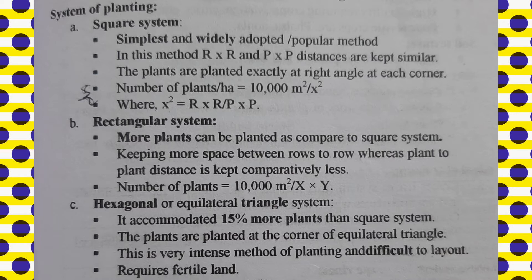The next one is the hexagonal or equilateral triangle system. Here, 15% more plants can be accommodated as compared to the square system. The plants are planted at the corners of an equilateral triangle, which is why it is also known as the equilateral triangle system. This is a very intense and difficult method of layout to accommodate all the plants and get good outgrowth.